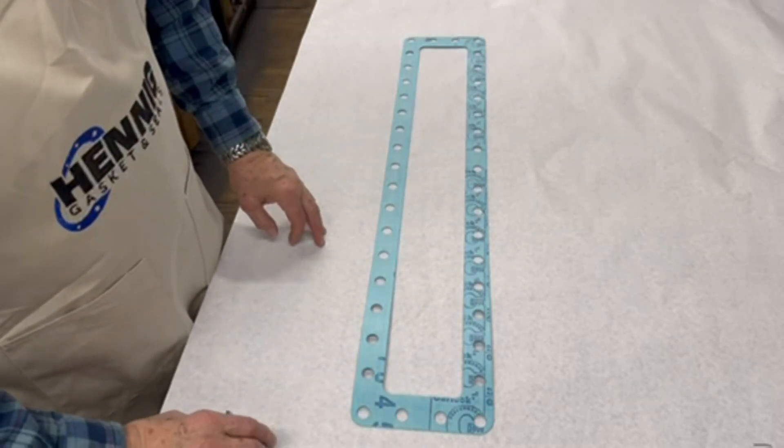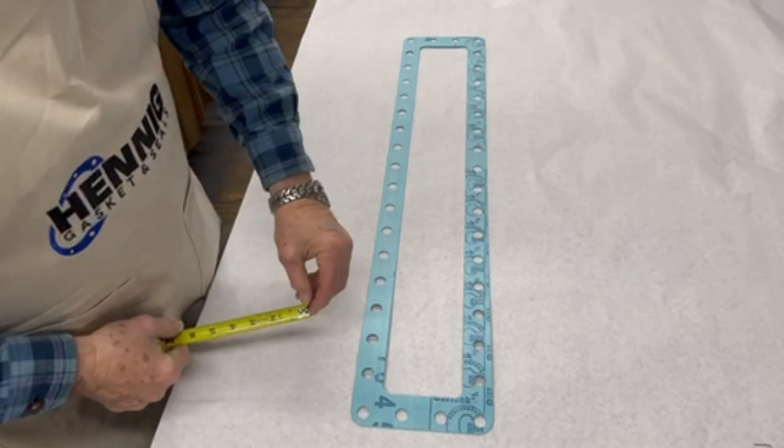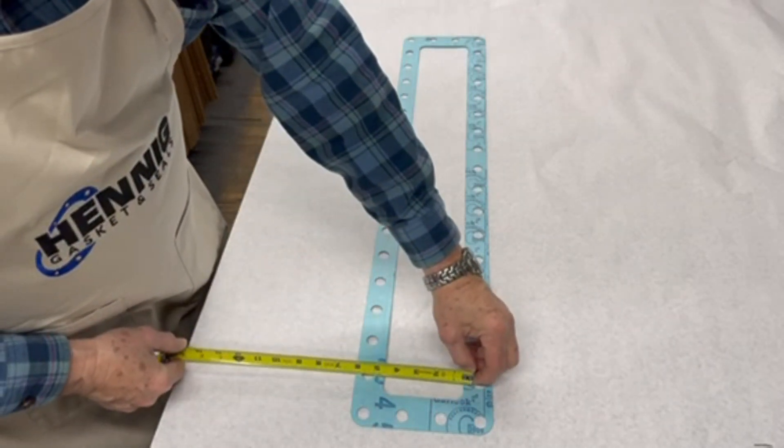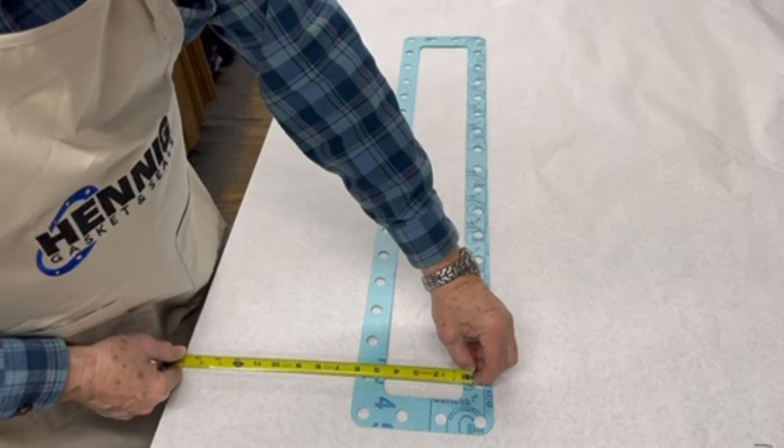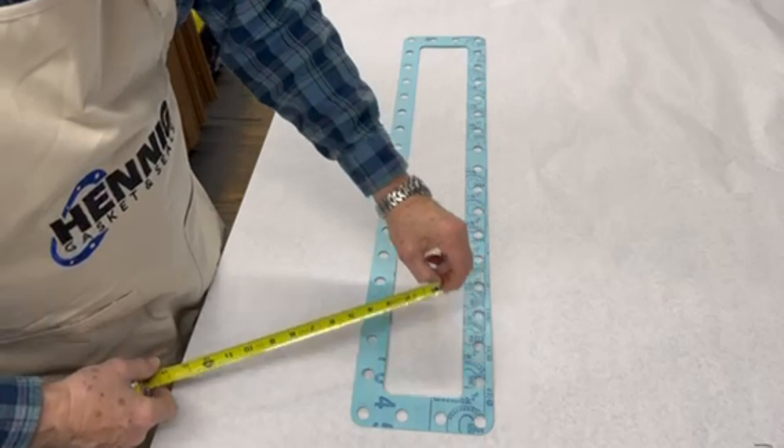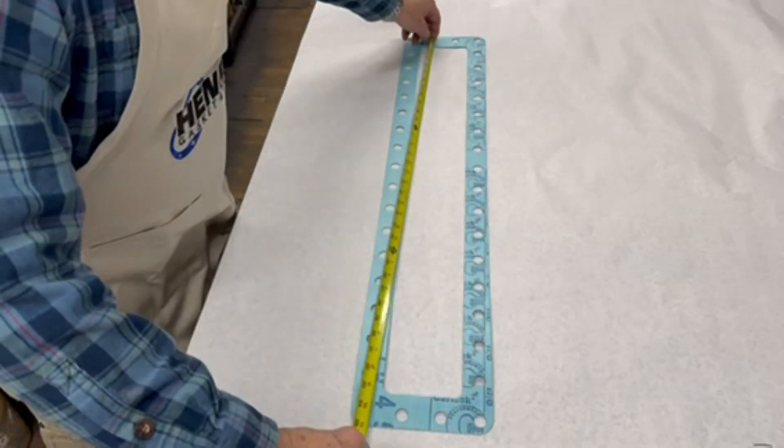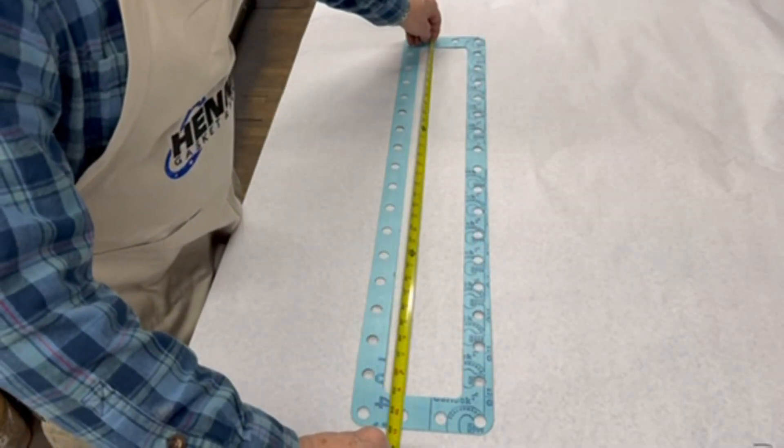Now we'll get the spacing between the holes. So we'll go from one side to the same side on the other. The spacing in this is 5 and 5 eighths. For the long way it's 34 and a half.